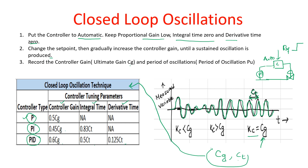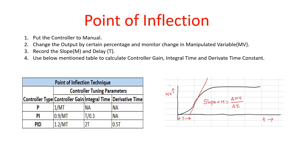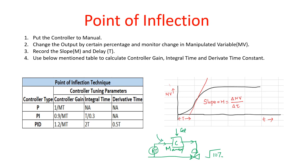The next approach is the point of inflection method. Here, the controller is put into manual mode. The output is changed by a certain percentage — say 10% — changing the valve opening by 10%. The measured variable is then monitored continuously, and the slope and delay of the response are recorded.